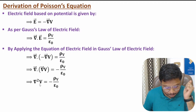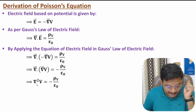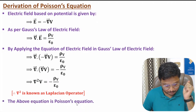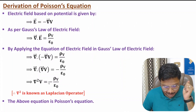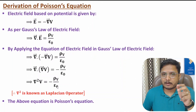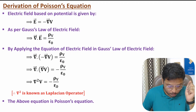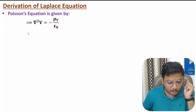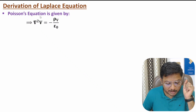So del squared V equals minus rho_v by epsilon naught. Here del squared is the Laplacian operator, and this equation is Poisson's equation. Poisson's equation is: del squared V equals minus rho_v by epsilon naught.